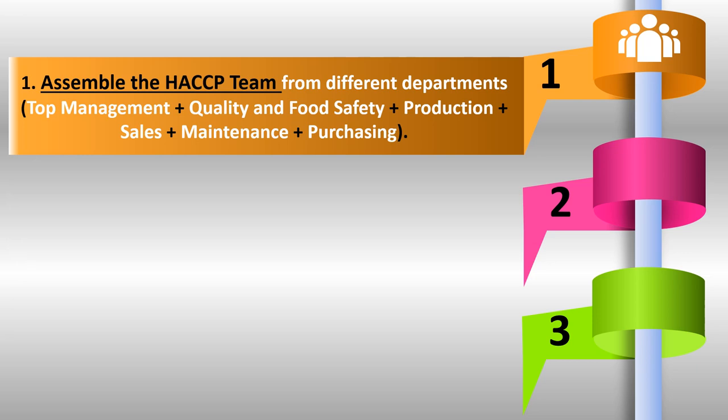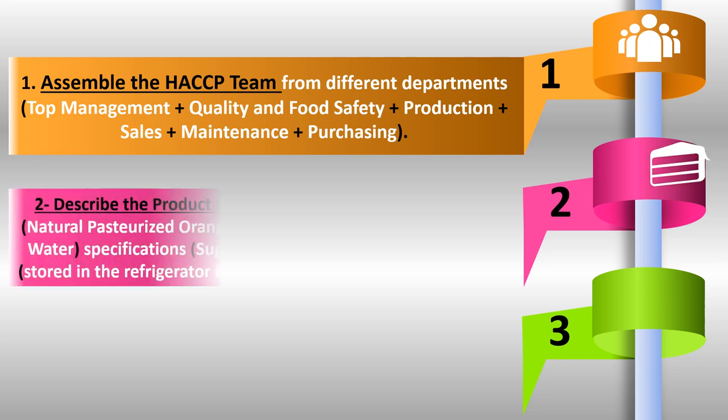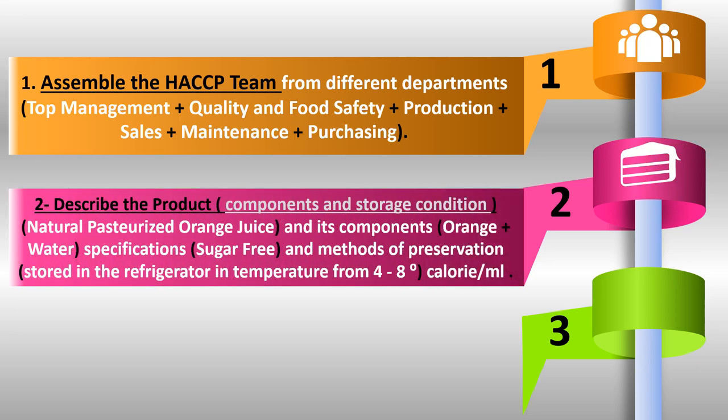Step 2: for the orange juice, we must have a description of the product components and storage conditions. For example, this orange juice is a natural pasteurized orange juice. Its components are orange plus water; it is sugar-free. The method of preservation is storage in a refrigerator at a temperature of 4 to 8 degrees Celsius. We can also mention the calorie count and the bottle volume.